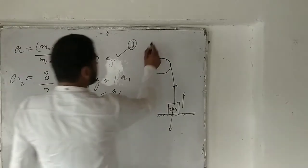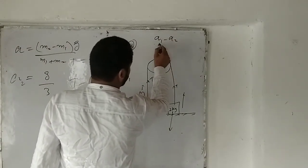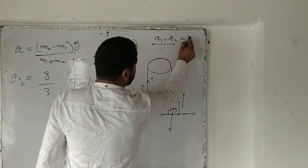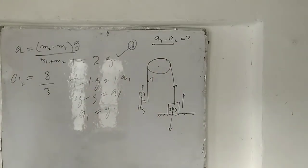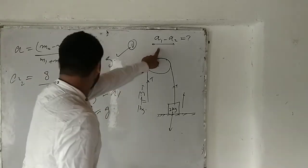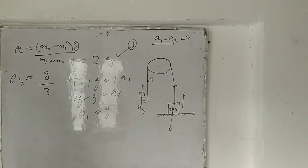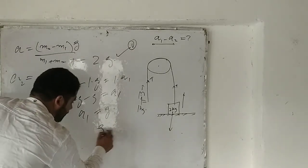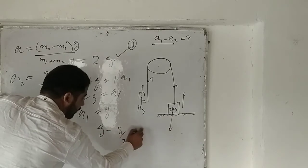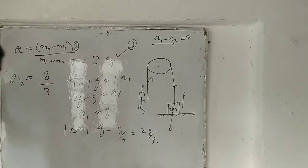Now I need to calculate the change in acceleration. I have two values: initially the cat accelerated at a₁ = g, and in the second case the system accelerates at a₀ = g/3. So the change in acceleration is g − g/3 = 2g/3.